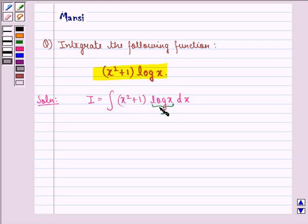So log x will be the first function and x square plus 1 will be the second function. Now by integration by parts we have I will be equal to first function that is log x into integral of second function that is x square plus 1 dx minus